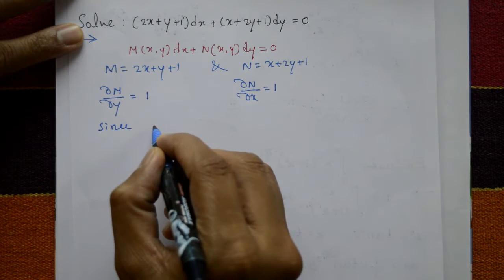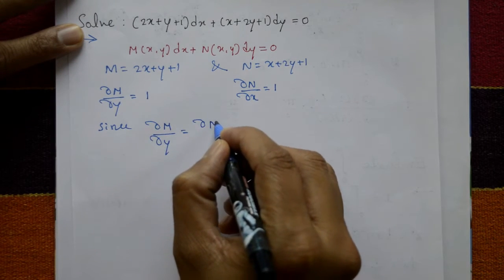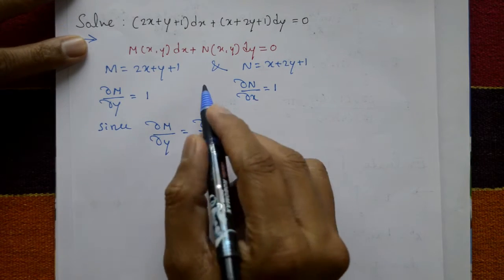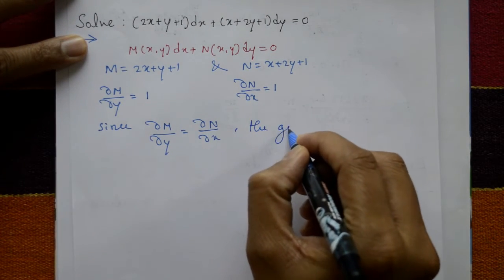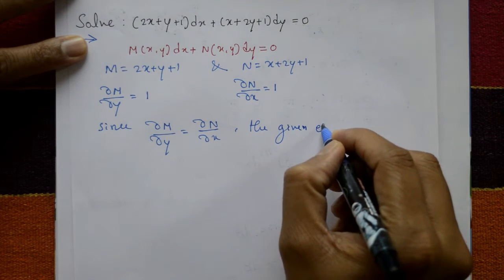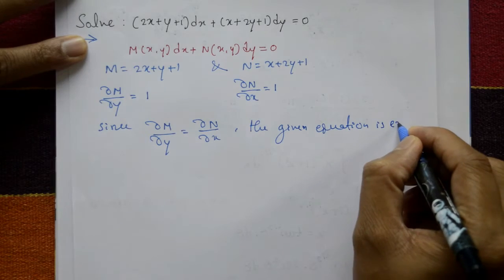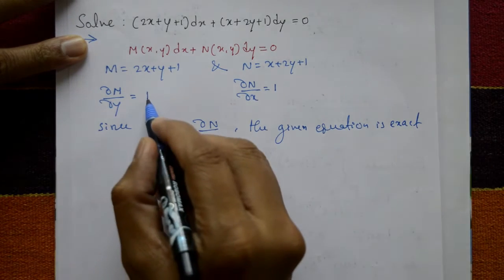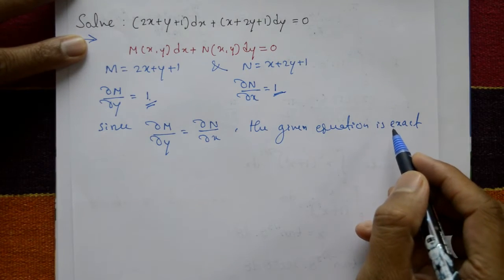Now since ∂M/∂y = ∂N/∂x, both answers are the same. The given equation is exact. This is the answer and this is the answer. Both are same, means equation is exact.